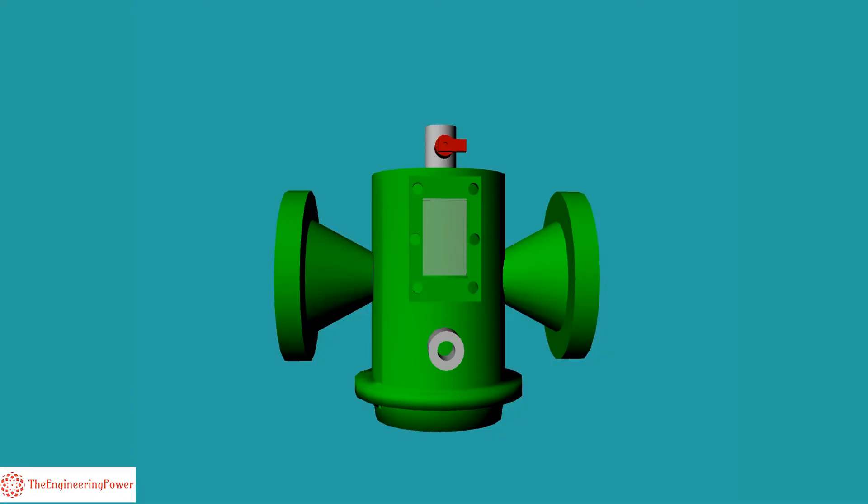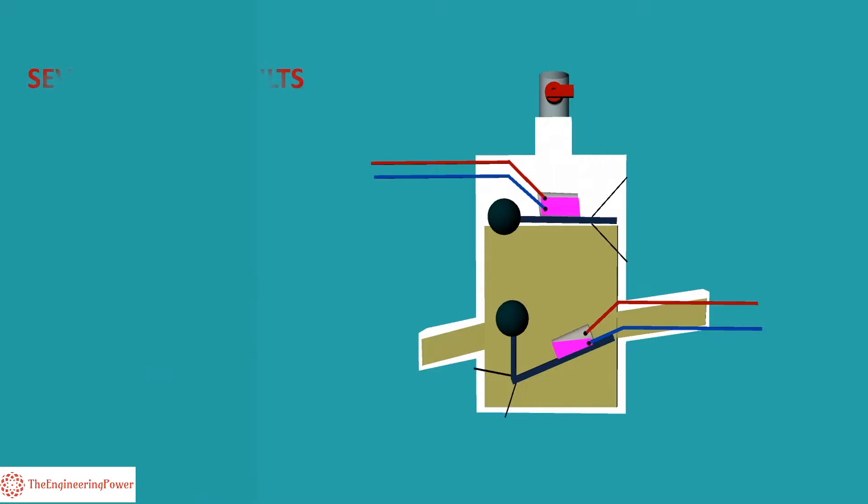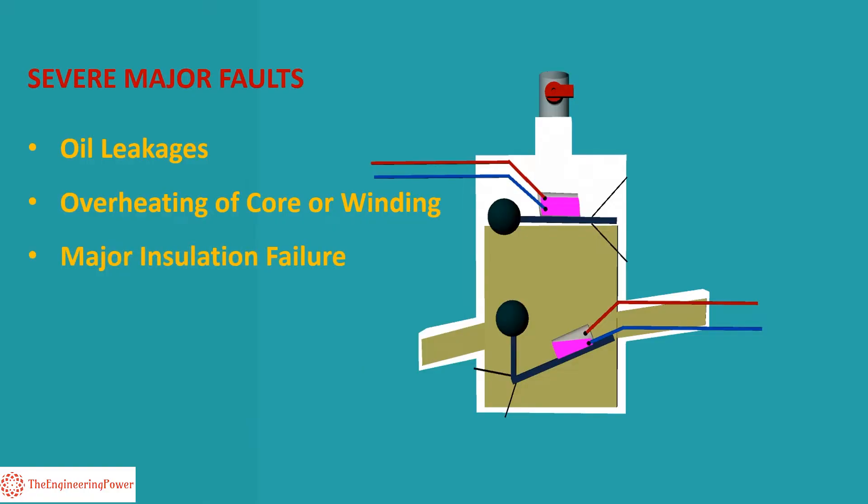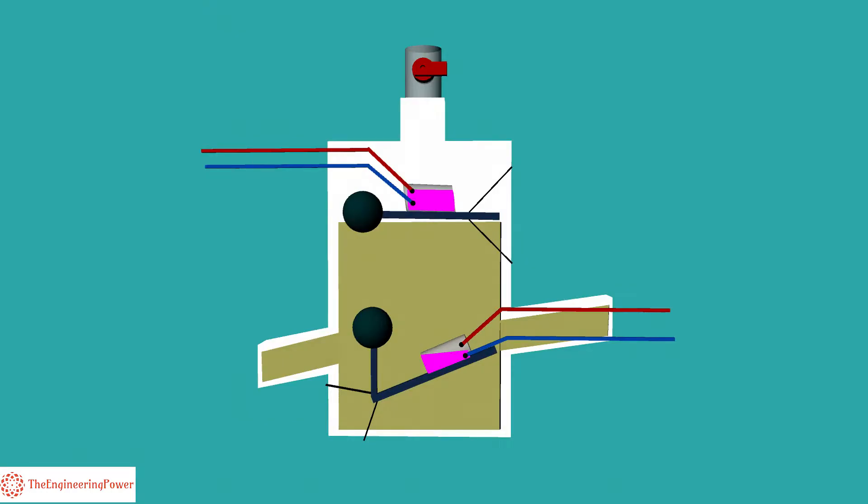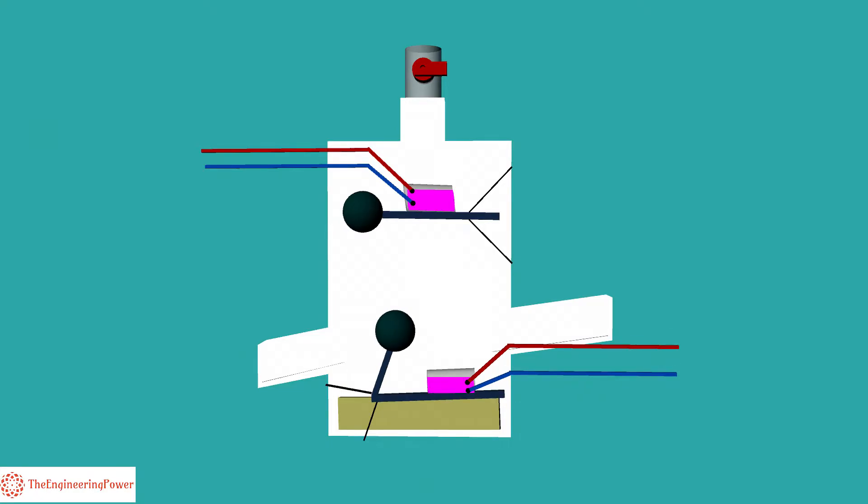Now we explain the working of the trip function of Buchholz relay. During severe major faults like oil leakages, overheating of core or winding, major insulation failure or fault in tap change equipment, oil level in the relay and conservator falls continuously, which results in tilting the lower float downwards causing the mercury switch to close and ultimately tripping the transformer.